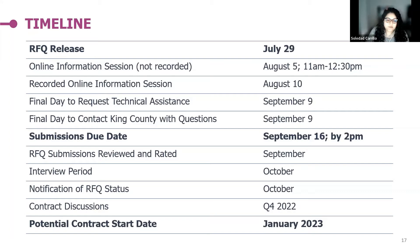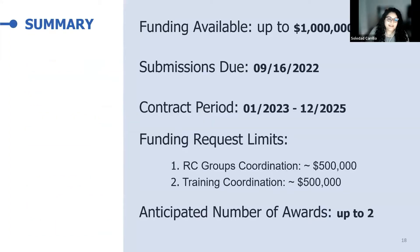Here is a summary of the key element information. We have funding available up to $1 million. Submissions are due Friday, September 16. The contract period is potentially January 2023 through December 2025. We're estimating that each body of work is about $500,000 each, and we anticipate awarding up to two organizations.